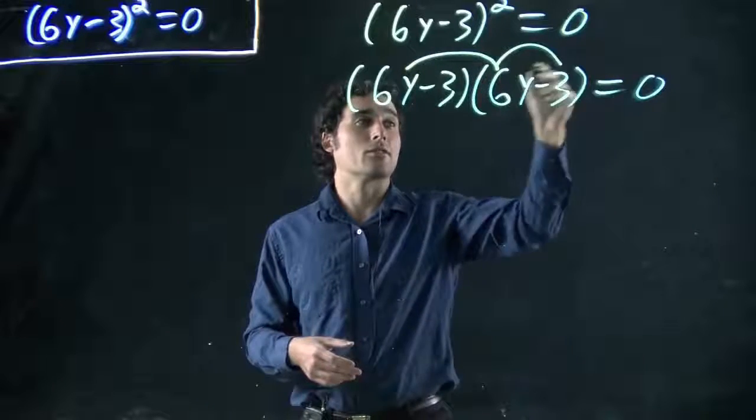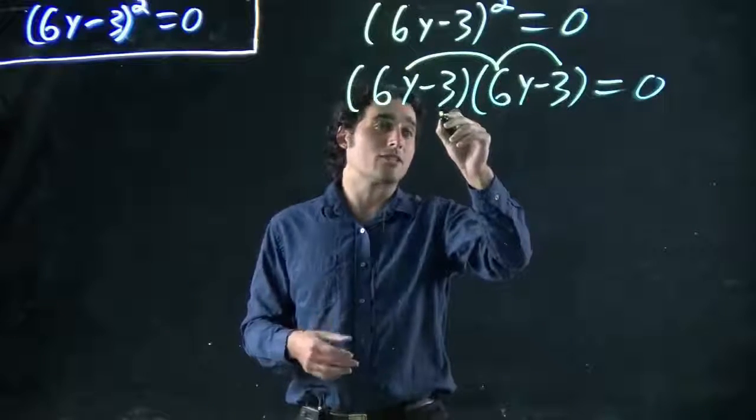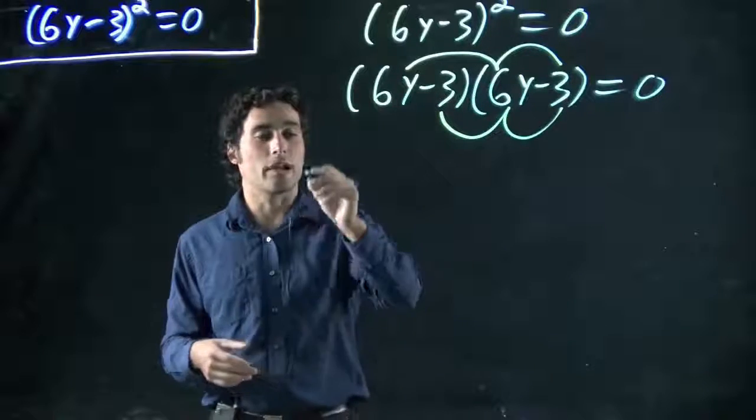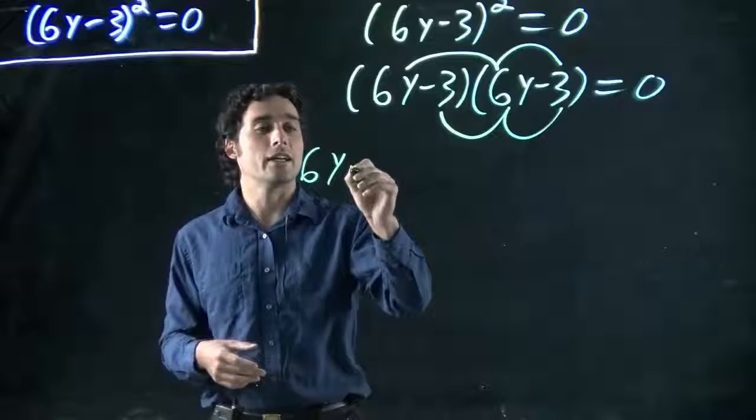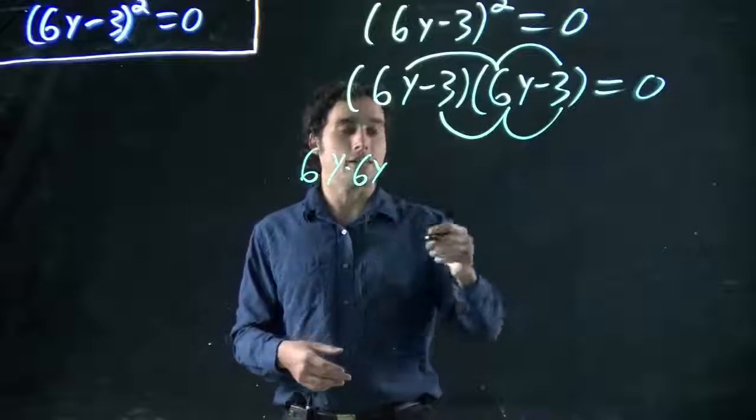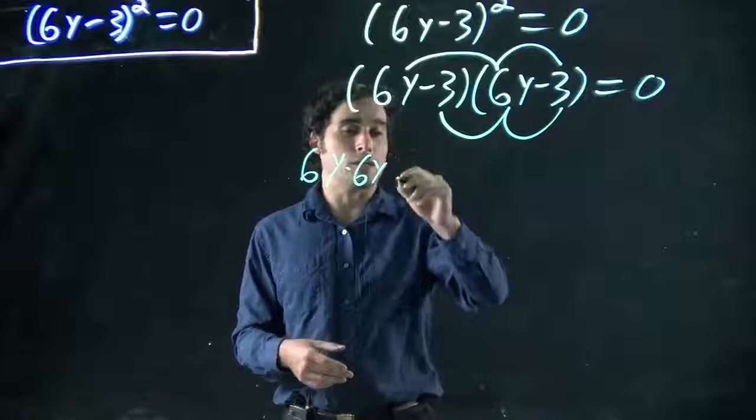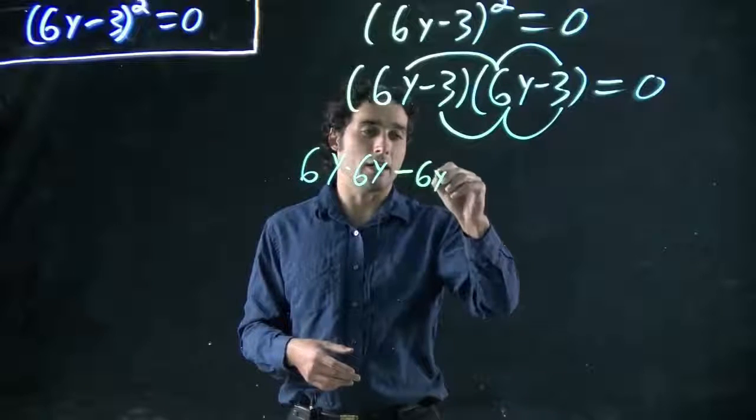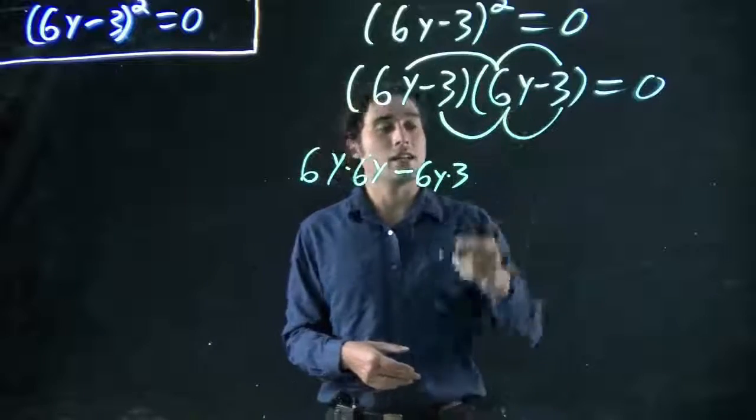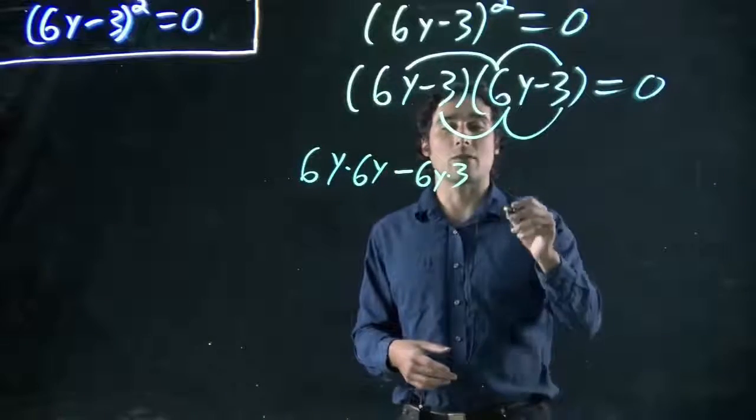Well, now, we're just doing that same expansion, where I take what's in my first bracket and multiply it by everything in the second bracket. So 6y will be multiplied by 6y and by 3. 3, or minus 3, is going to be multiplied by 6y and minus 3.